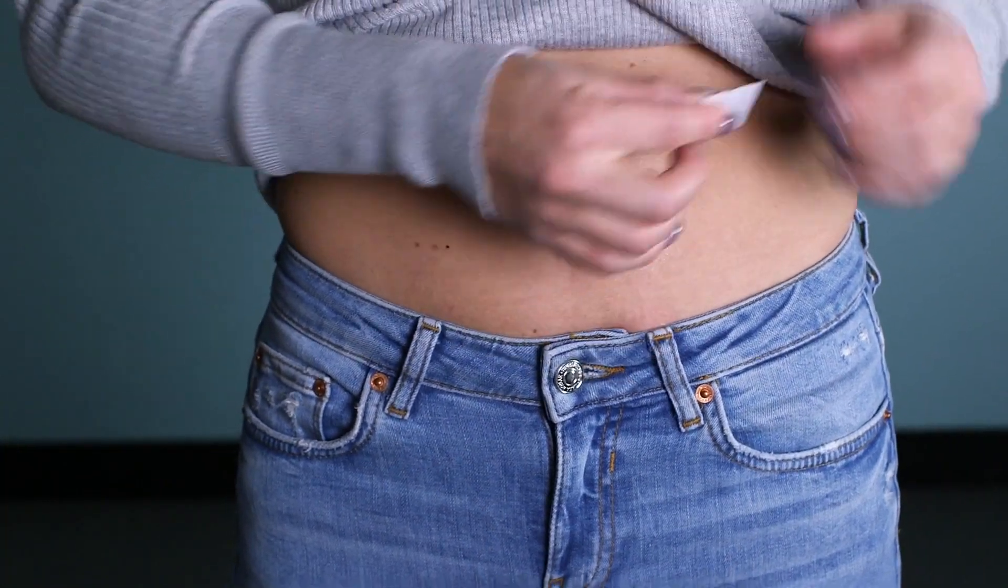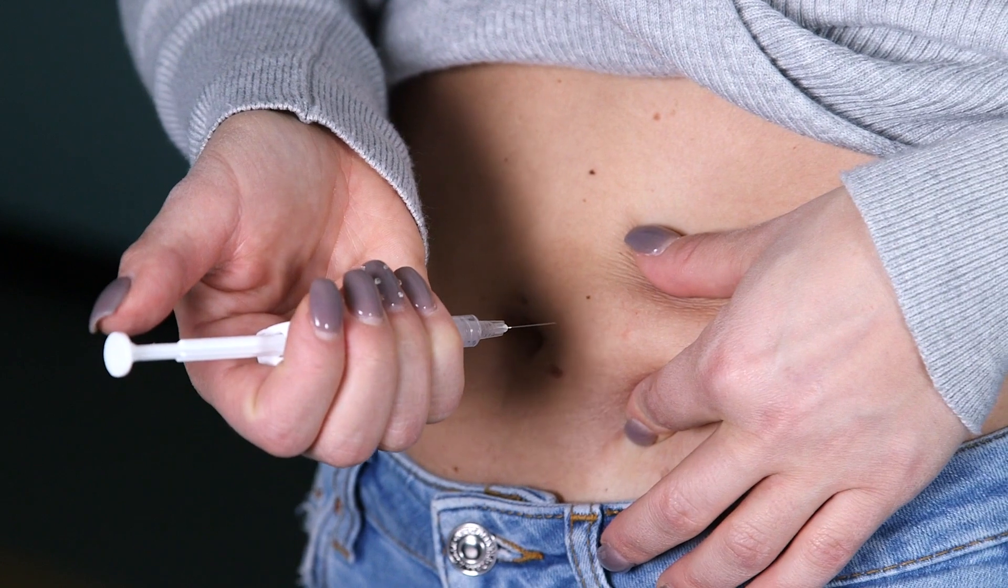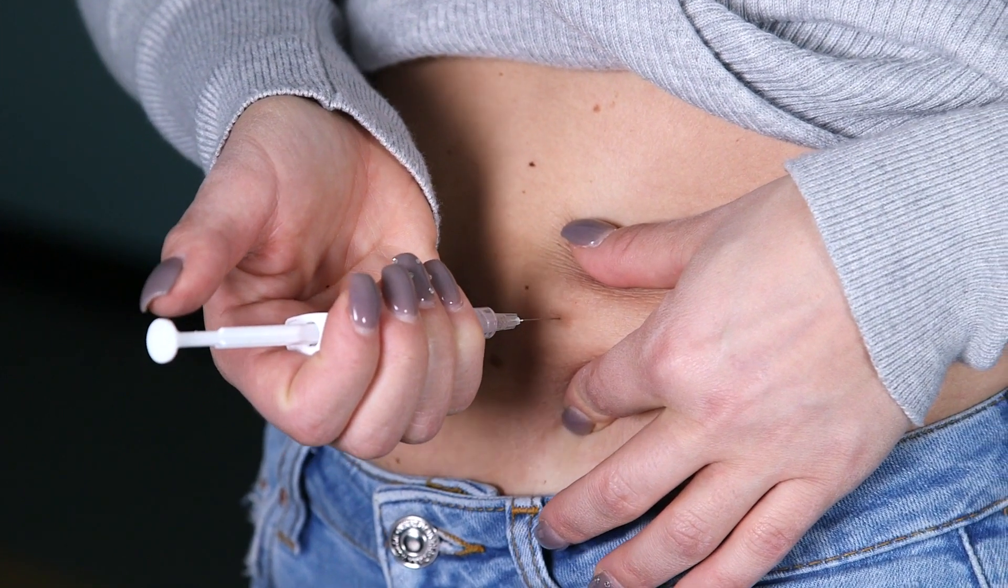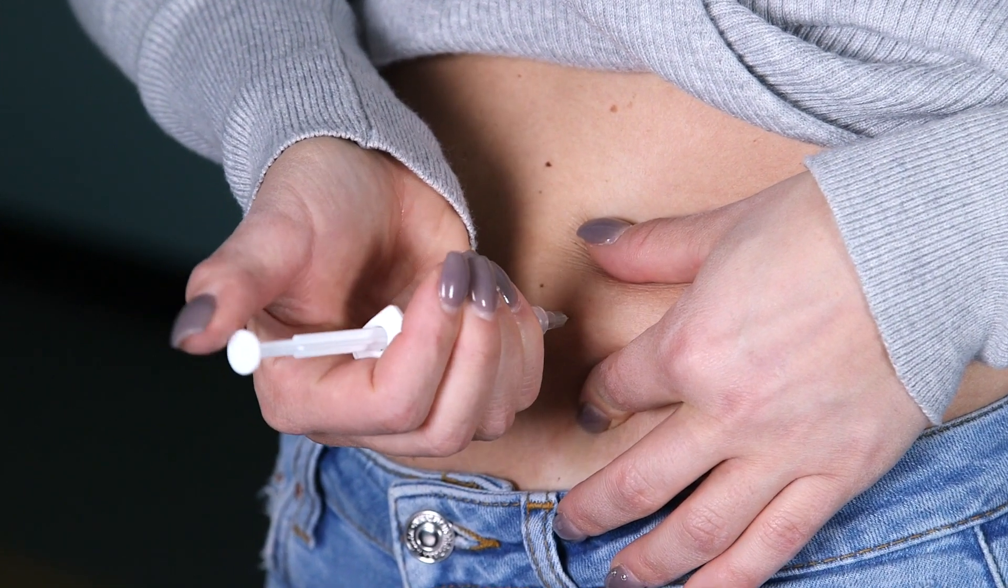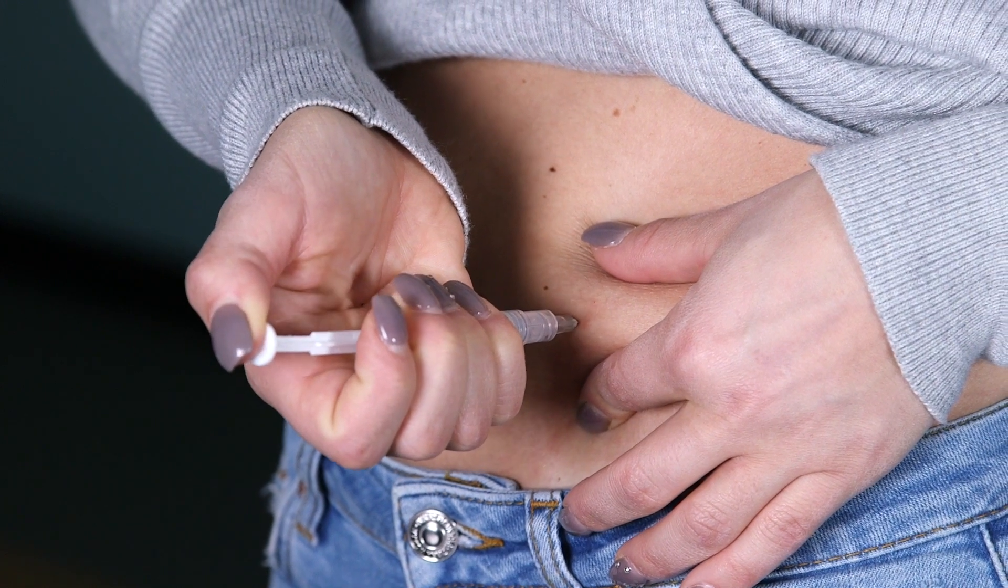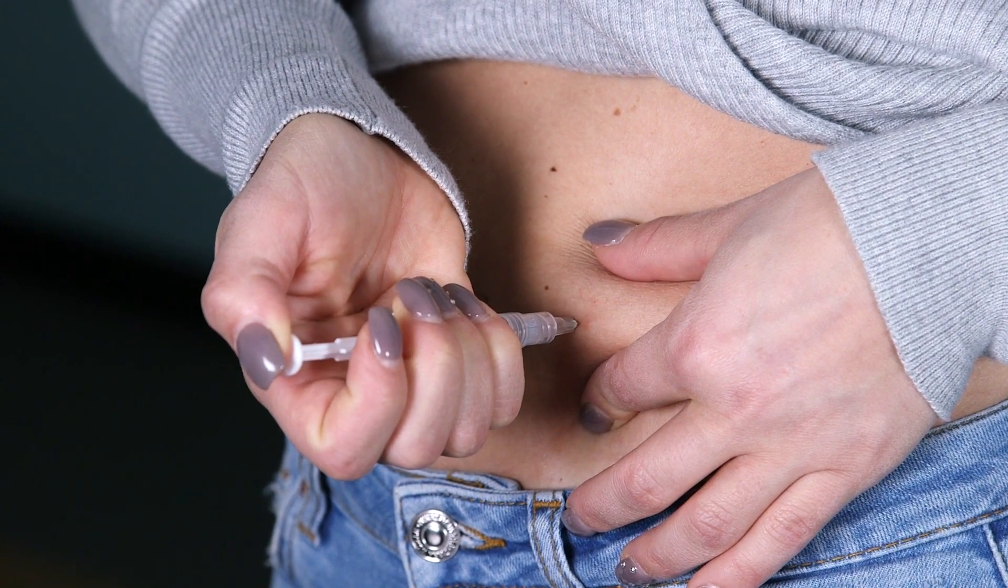Alcohol wipe the area and allow to dry. The needle goes straight in at a 45 to 90 degree angle. Depress the plunger until it's all injected.